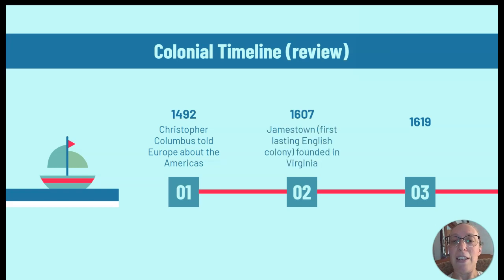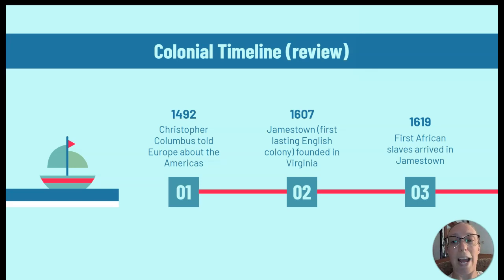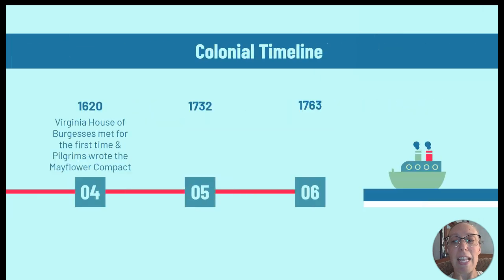About 100 years later, Jamestown was founded in Virginia — the first lasting English colony. Only 12 years later, the first African slaves arrived in Jamestown. Slavery was already well established in the Spanish colonies in Latin America, so it was not a new idea. Sadly, slavery became part of life in the American colonies at about the same time that slaveholding colonists became concerned with the idea of their own rights.